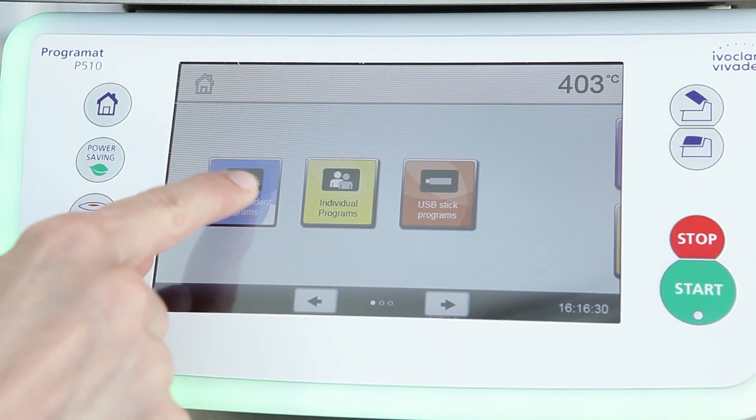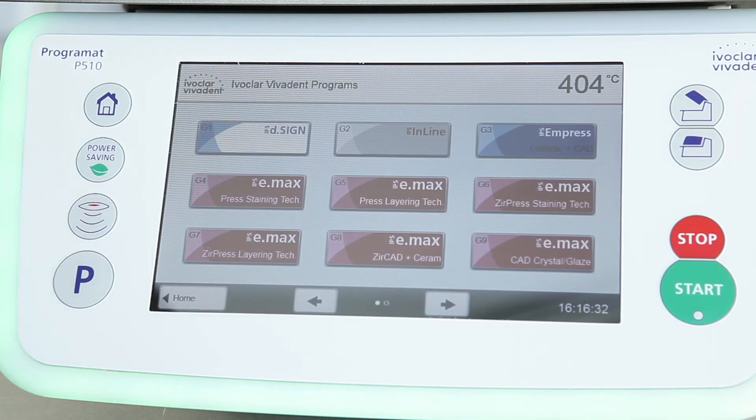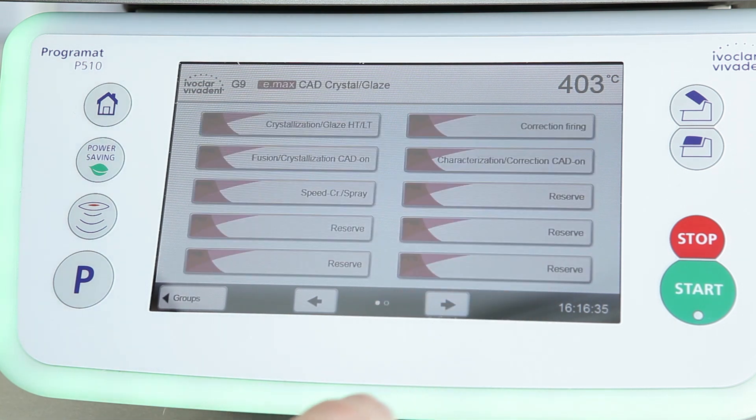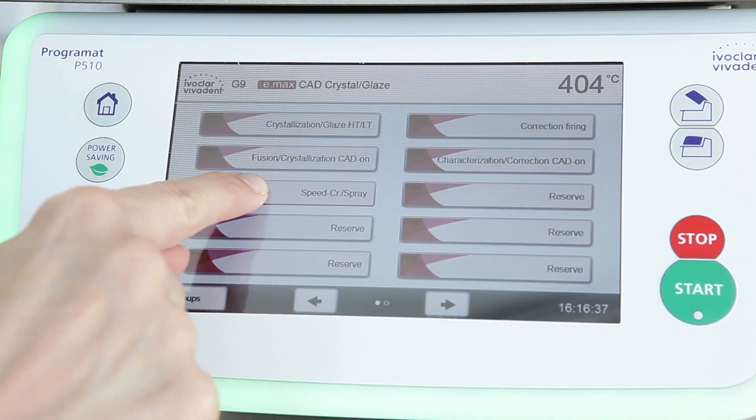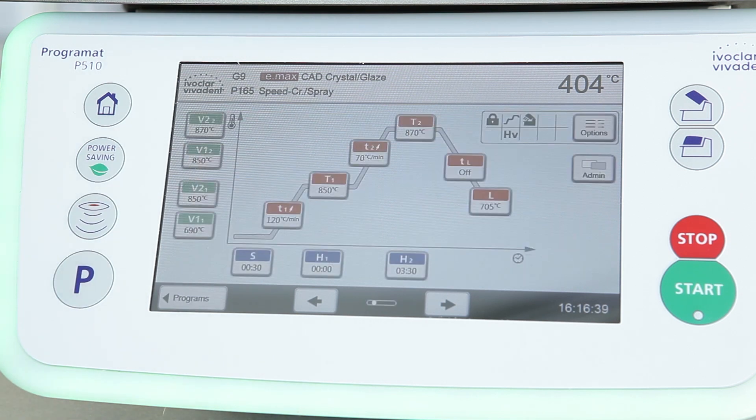Position the crown on the IPS Emax CAD speed crystallization tray. Place the tray in the firing chamber and fire the crown using the pre-installed firing program.